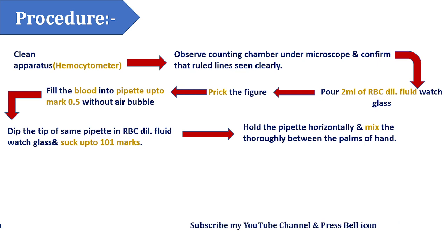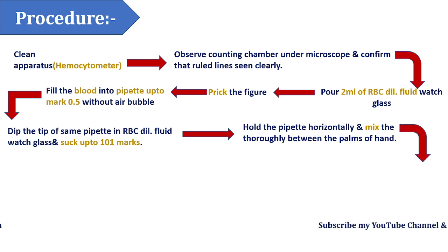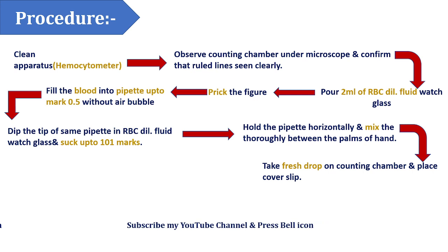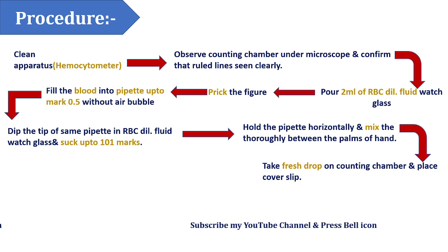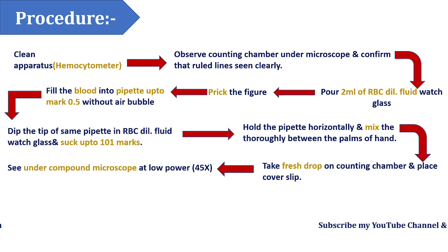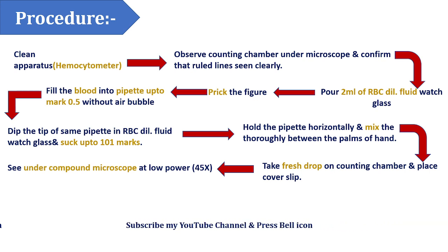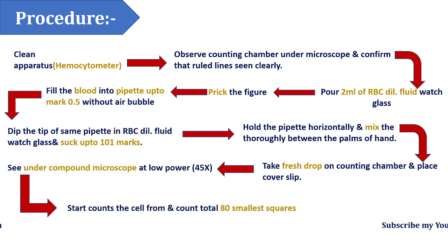Mix the contents horizontally for eight to ten minutes. After mixing, discard the first six drops and use the fresh drop from the pipette. Place this fresh drop onto the Neubauer counting chamber, put a cover slip over it, and observe under the compound microscope at 45x — that is high power, not low power. Focus carefully to identify the smallest square boxes for counting.